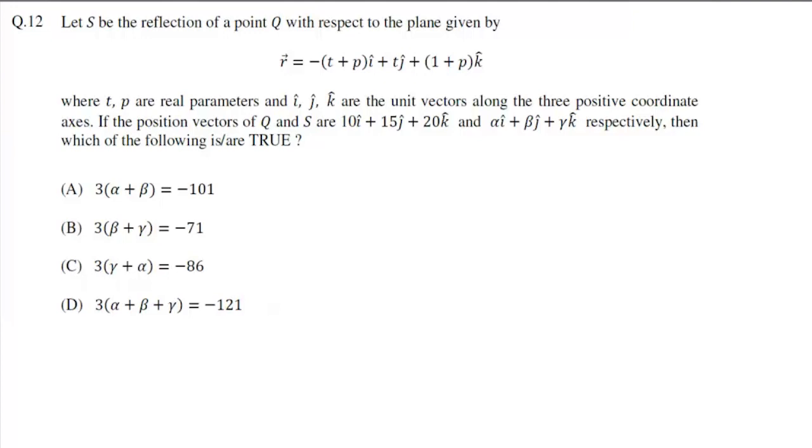In this question we are given a plane with equation r = -(t+p)i + tj + (1+p)k. It says S is a reflection of Q and we are given position vectors of Q and S. Then which of the following is or are true? Now first we'll simplify equation of this plane.